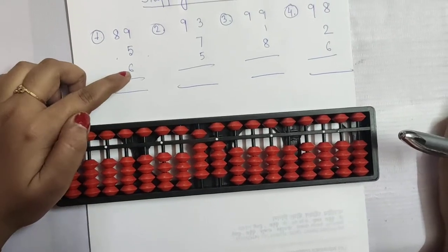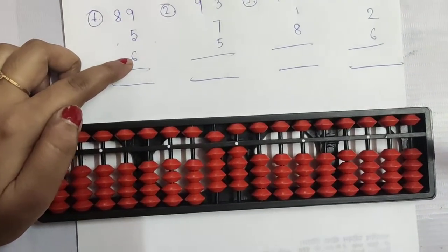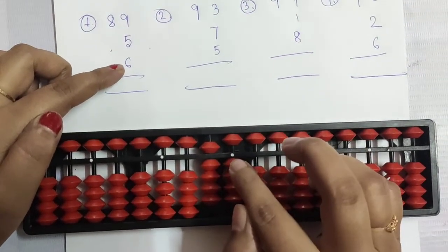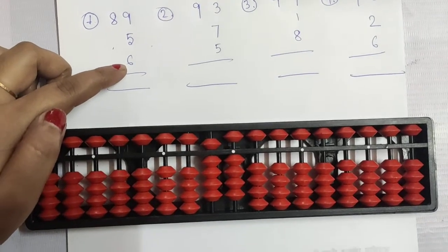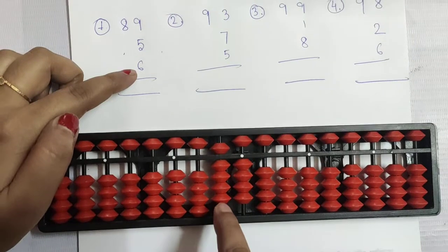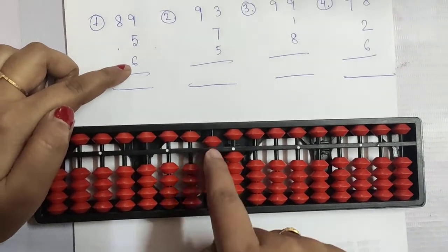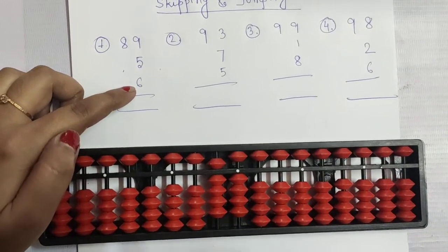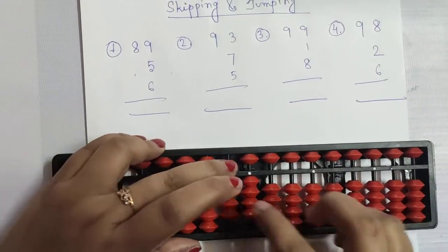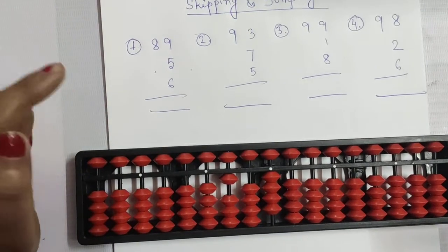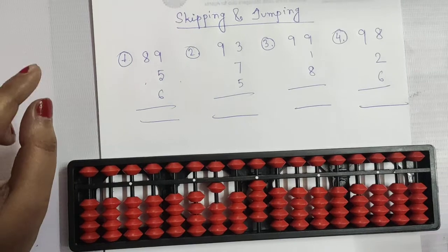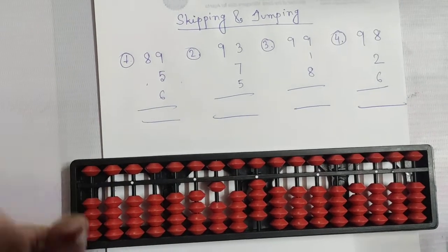Now you have to add 6. See here carefully — only 5 bits are left here, so you can't add 6. So you have to go to your boss, but see here no boss is left here. So you have to skip the rod. So add 100, less 90. 100 less 90 leaves 10. So you got your boss. 10 boss is added.